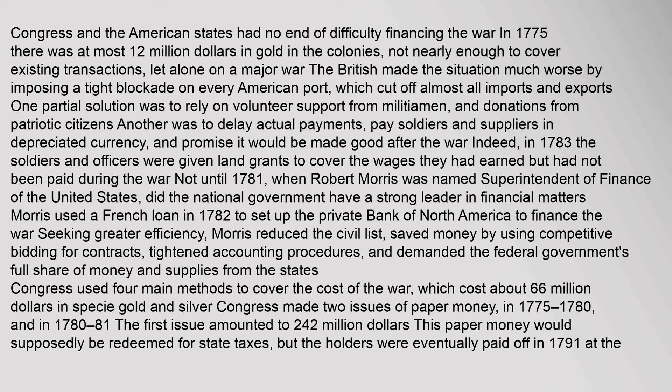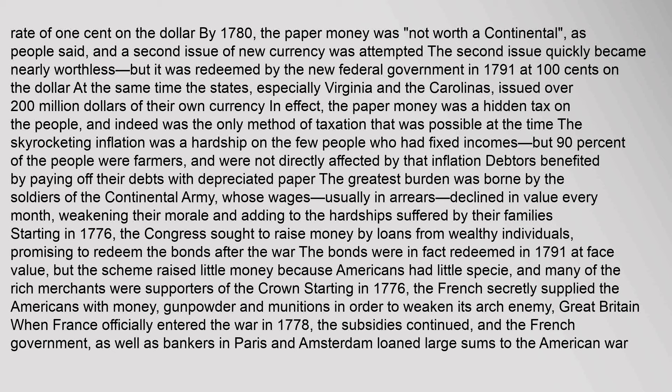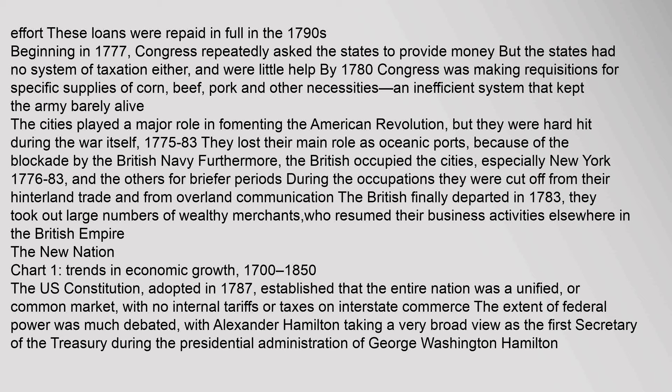Not until 1781, when Robert Morris was named Superintendent of Finance of the United States, did the national government have a strong leader in financial matters. Morris used a French loan in 1782 to set up the private Bank of North America to finance the war. He reduced the civil list, saved money by using competitive bidding for contracts, tightened accounting procedures, and demanded the federal government's full share of money and supplies from the states. Congress used four main methods to cover the cost of the war, which cost about $66 million in specie. Congress made two issues of paper money; the first issue depreciated to one cent on the dollar by 1780, and the paper money was not worth 'a continental,' as people said.